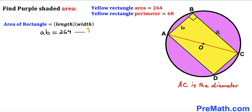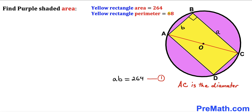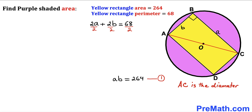The perimeter of this yellow rectangle is given as 68. The perimeter equals 2 times a plus 2 times b, so 2a plus 2b equals 68. Dividing each term by 2, we get a plus b equals 34. Let's call this equation number 2.